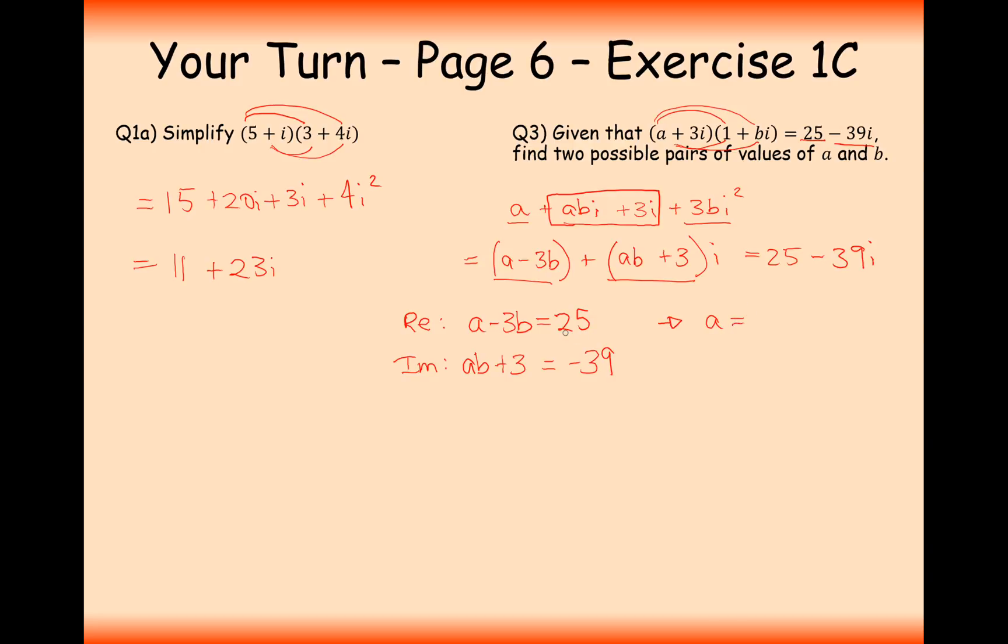Now what I'm going to do is try and solve these by simultaneous equations. So it's a, let's make a the subject of the first one, so 25 plus 3b. Now let's substitute that into the second one here. So 25 plus 3b is the value for a, then times that by b. So a is slotted in here, and then we've got to times it by b, then plus 3 onto it, and we get minus 39. Now expand the brackets here, 25b plus 3b squared plus 3, and let's add the 39 onto the left-hand side now.